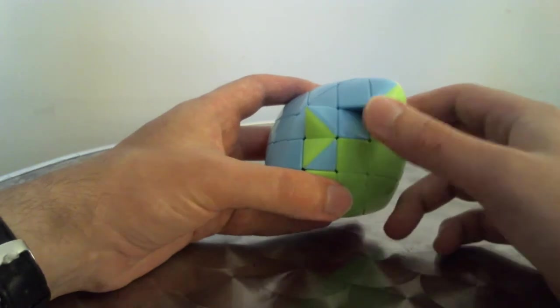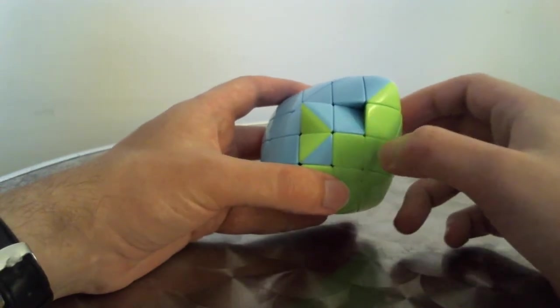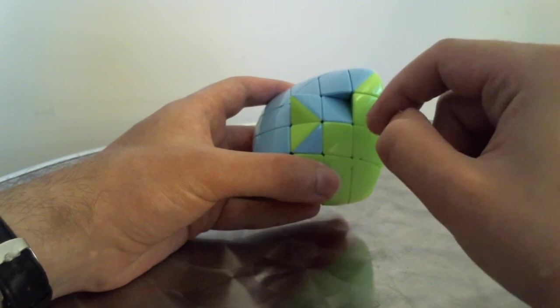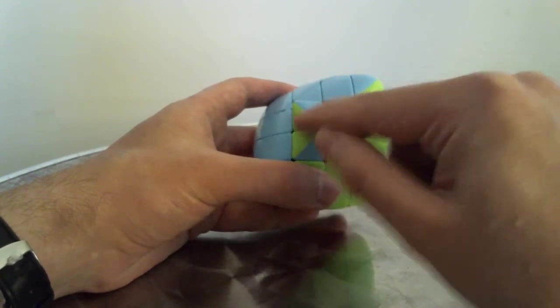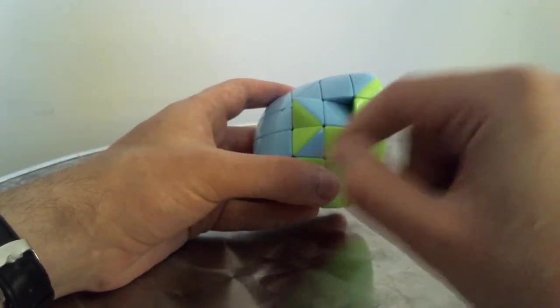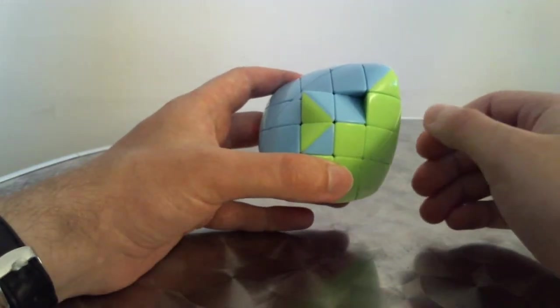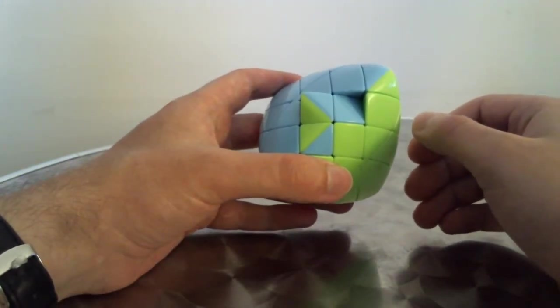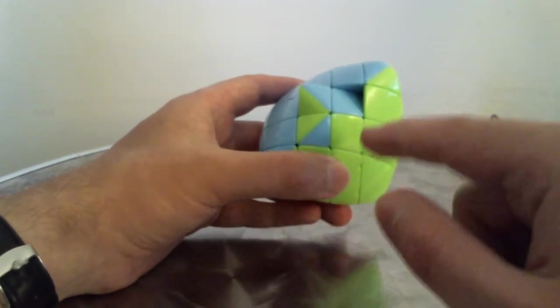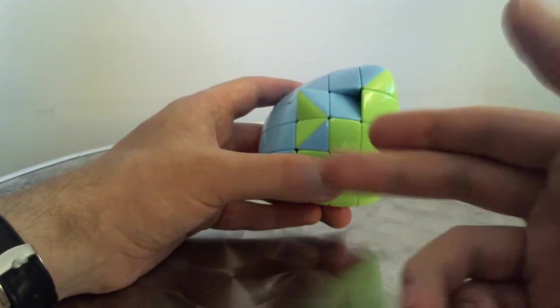So what we're going to do now is we're going to have to do a little deconstruction in order to basically cycle these three centerpieces amongst each other without affecting any other centerpieces.